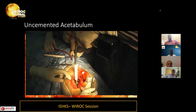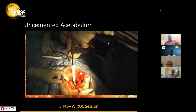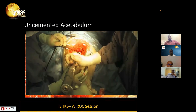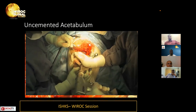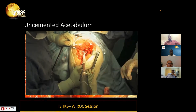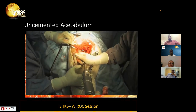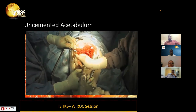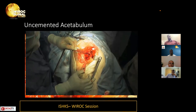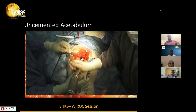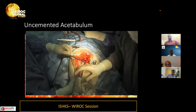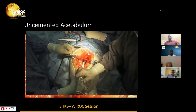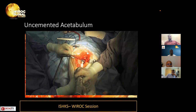One must achieve an antero-posterior fit between the antero-superior and postero-inferior columns, and also stability in the perpendicular direction — referred to as superior-inferior toggle. An important tip: measure the head diameter and ensure the cup is not more than four millimeters larger than the head diameter. For example, with a 46mm head diameter, a 50mm cup is appropriate; over-reaming the acetabulum will damage the bone.